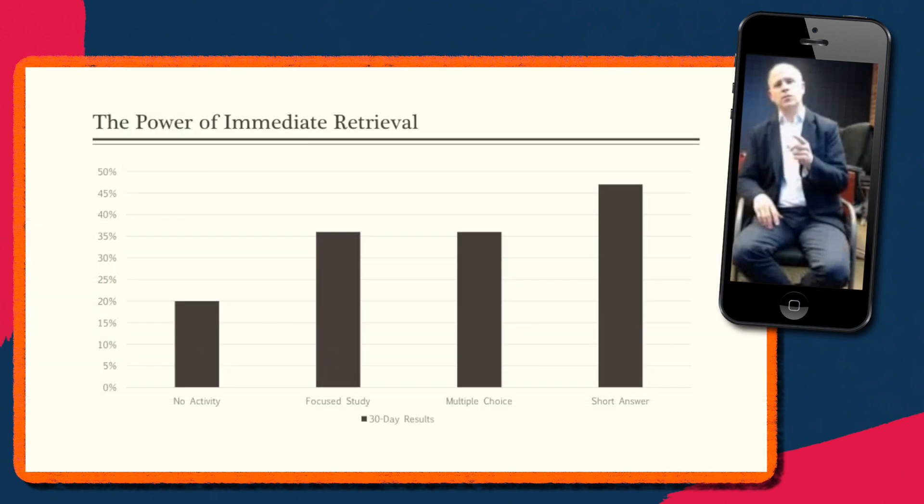But at the end of each of those lectures, they did something a little bit different. In the first case, they had students listen to the art history lectures and then just sort of walk out. And that's what you see as the first example, no activity. When those students came back 30 days later, they took a test on the material and were able to score about 20% on that test.